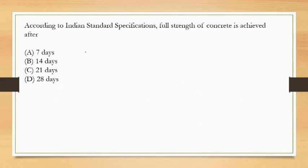Next question: according to Indian Standard Specifications, full strength of concrete is achieved after? At seven days it achieves around 65 percent of strength, and at around 28 days the strength is almost equal to 99 percent. So the full strength is achieved after option D, 28 days.